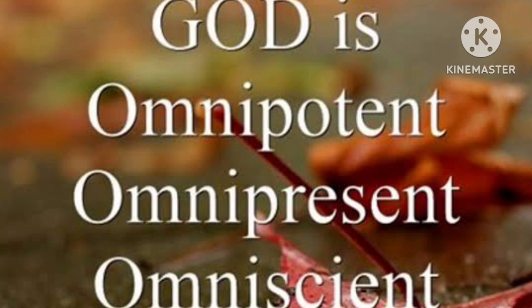Omniscient comes from 'omni' (all) and 'science/knowledge', so omniscient means all-knowing. In Hindi, omnipresent is 'sarvavyapt' (present everywhere), omniscient is 'sarvagya' (all-knowing), and omnipotent is 'sarv-shaktiman' (all-powerful). These three words — omnipresent, omnipotent, and omniscient — are generally used to describe God.